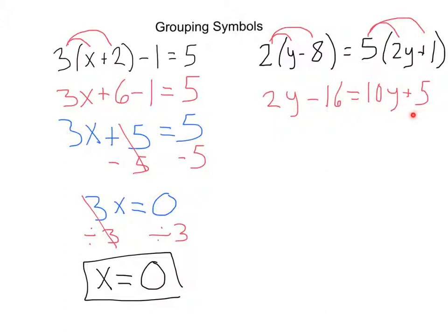Let's go ahead and get our variable to one side. Again, because I like to remain positive, I see that if I subtract 10y from this side and subtract 10y from this side, I'll end up with a negative. So I'm going to choose to subtract 2y from this side, subtract 2y from the right as well. That will cancel that out, leaving me with just the negative 16 equals 8y. That's 10y minus 2y, 8y plus 5.